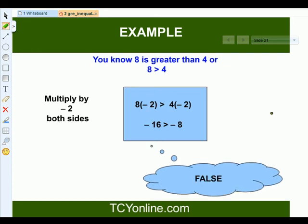Now instead of multiplying it by 2, we multiply it by negative 2. Then we get negative 16 is greater than negative 8, which is false. It's not true. So that means, if it is multiplied by some negative number, the sign gets changed.